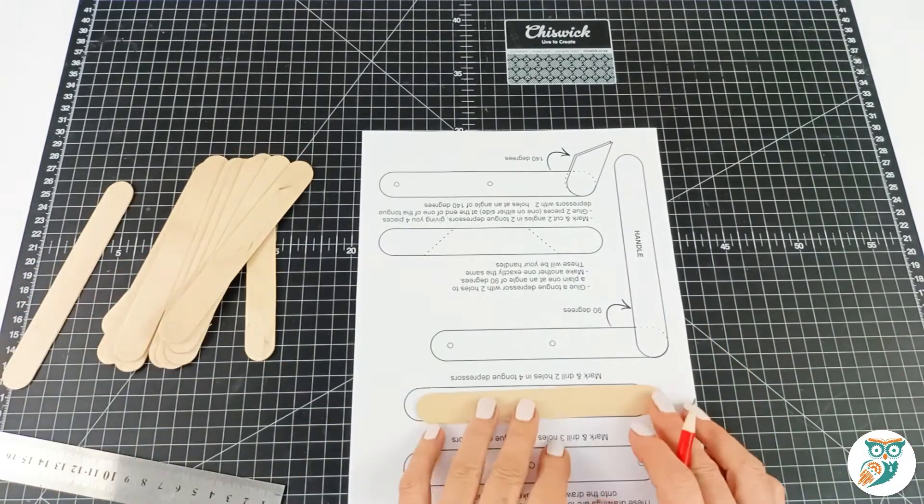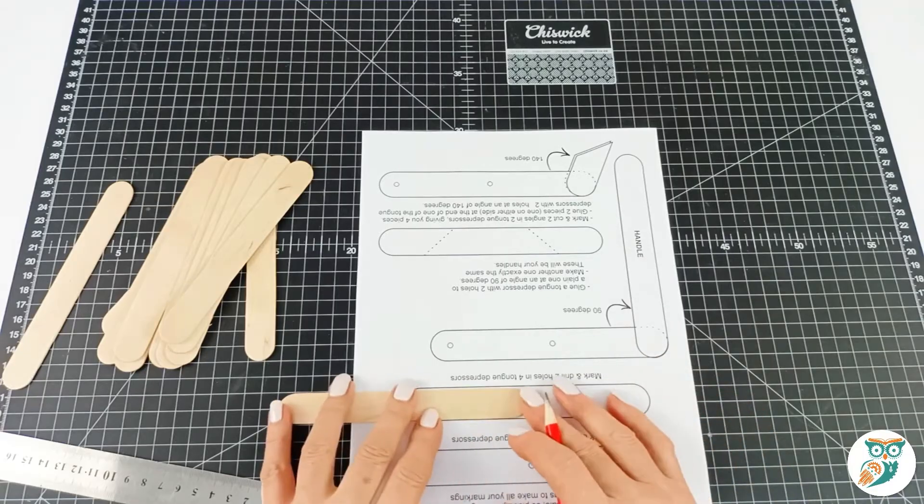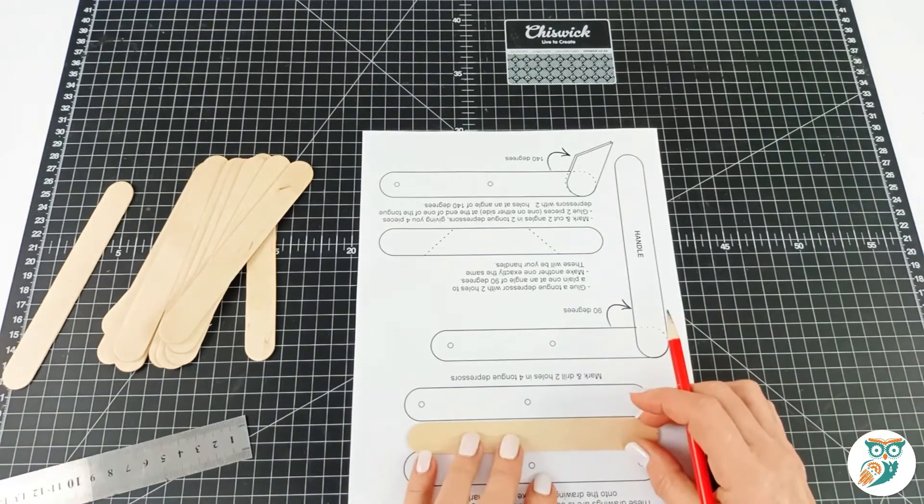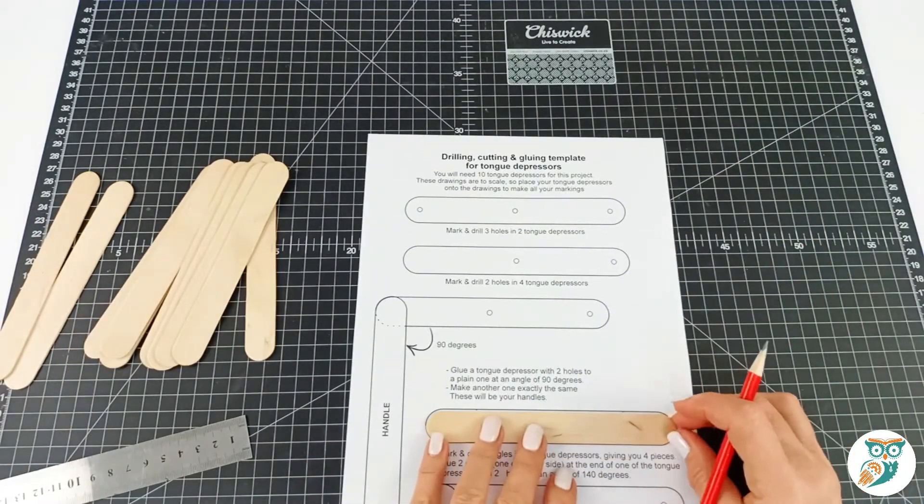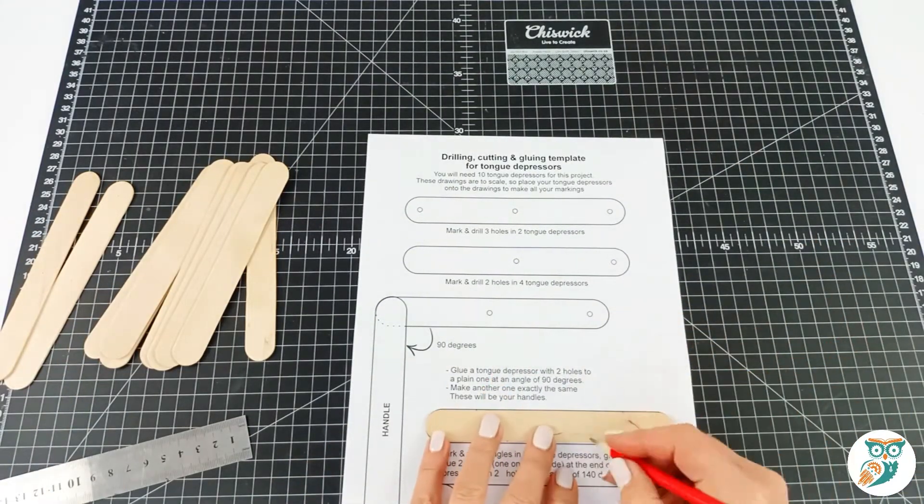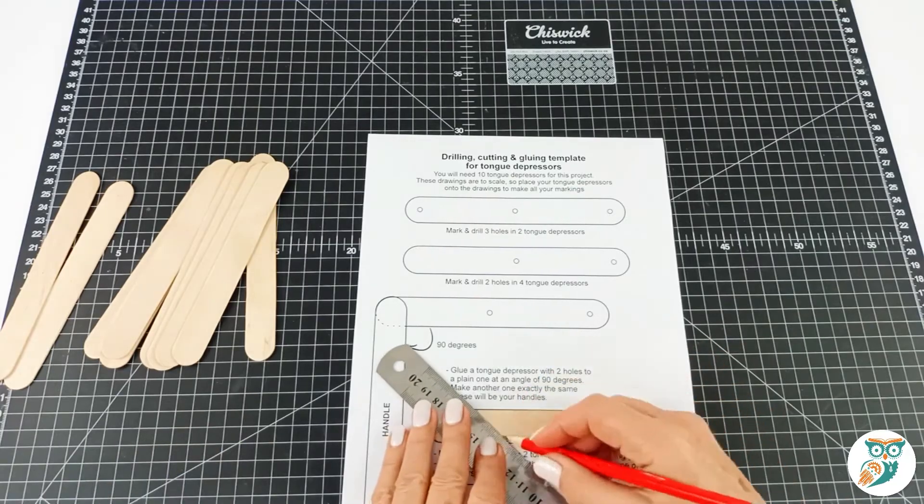We're going to start by marking our jumbo craft sticks. It's really important that these marks are done accurately and that ensures that everything hinges perfectly and will move evenly and nothing bows or goes off center when it's moving.